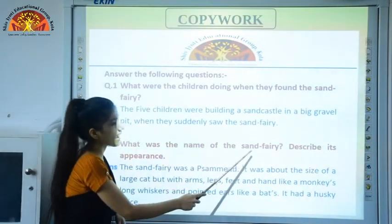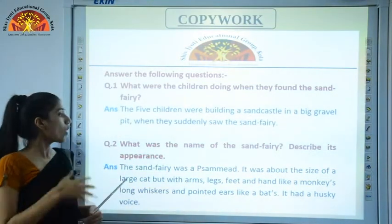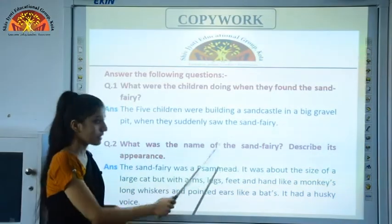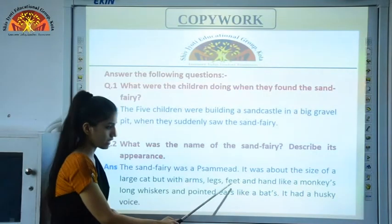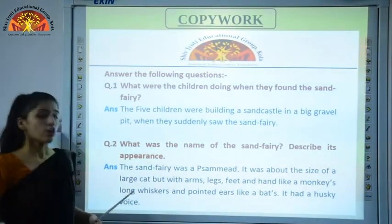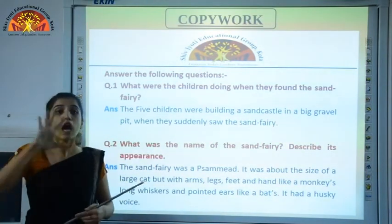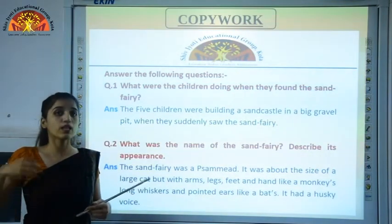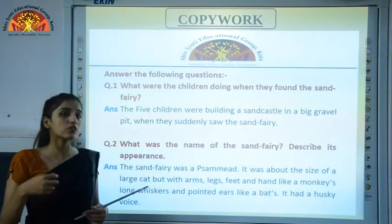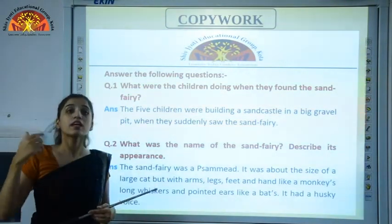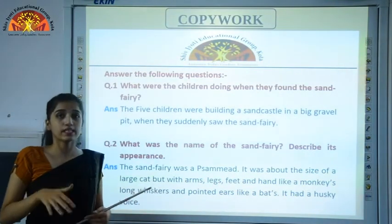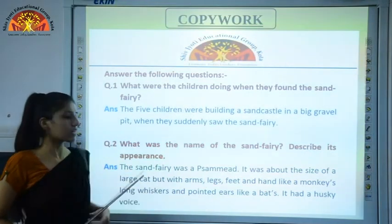Question number two: What was the name of the sand fairy? Describe its appearance. The sand fairy was a Simeat. It was about the size of a large cat but with arms, legs, feet, and hands like monkeys, long whiskers and pointed ears like bats, and it had a husky voice — a very rough voice.